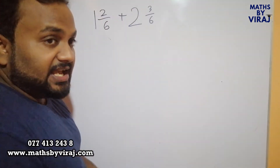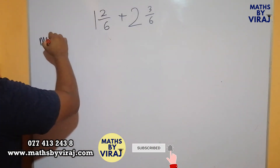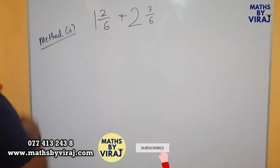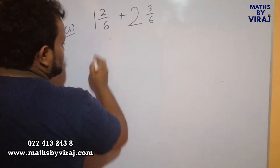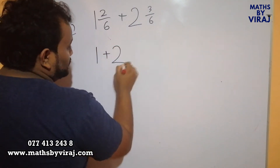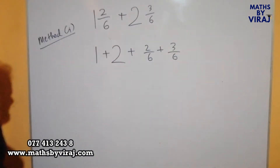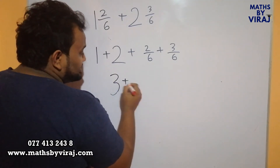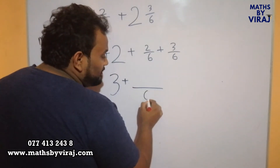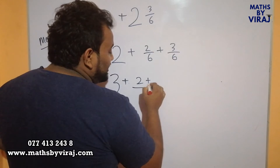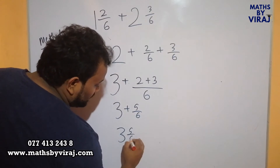Children, if you look at the example on the board, there are two mixed fractions. There are two methods in which you can solve this. In method 1, what we do is we consider the two whole numbers and add them together first. 1 plus 2. Then we add the proper fractions. 1 plus 2 is 3, plus — now you see that the denominators are the same, so we simply add the numerators. Therefore the answer is 3 and 5 over 6.